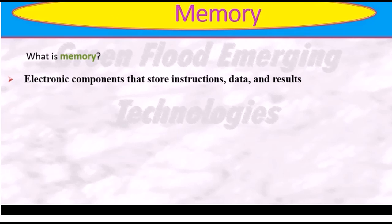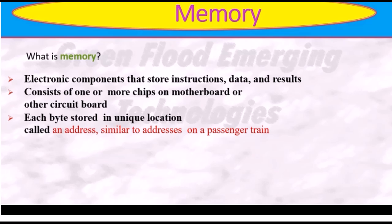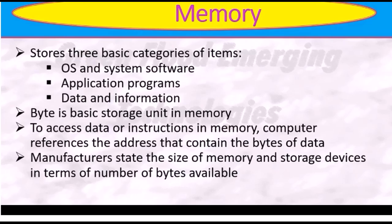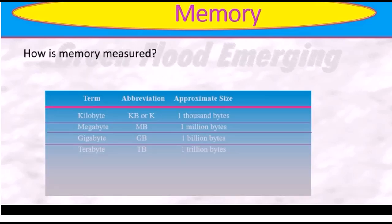In memory, we store everything — instructions, information — because the processor fetches data from memory. We get everything from memory. There are different types of memory used, and memory has evolved from starting with 8-bit, then 16-bit and 32-bit, and now over 64-bit systems. Each byte is stored in a unique location. In memory you can store operating systems, application programs, and data information.